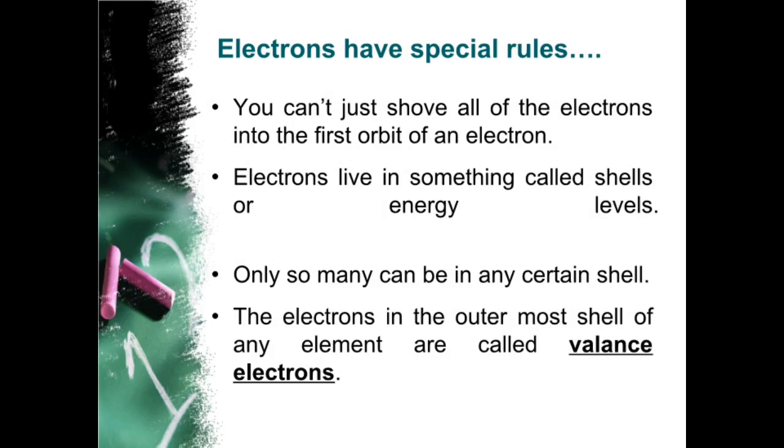The electrons in the outermost shell of any element are called valence electrons.